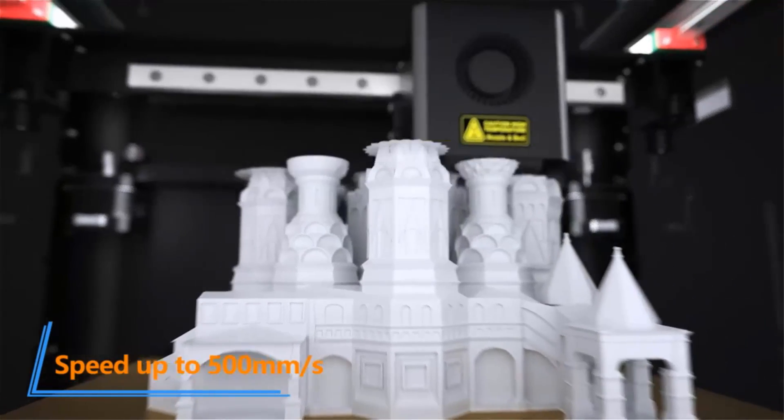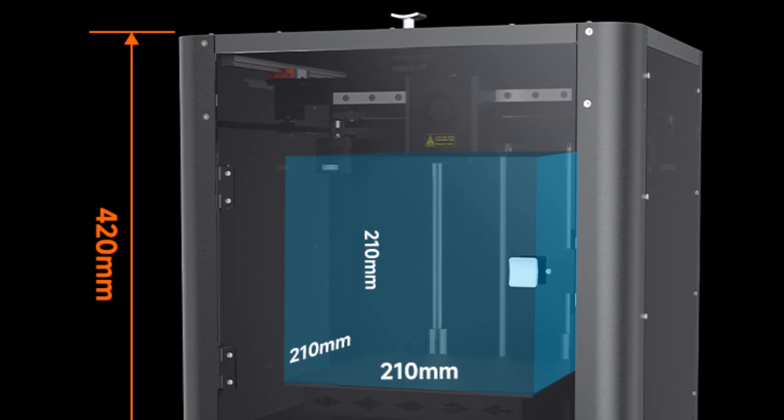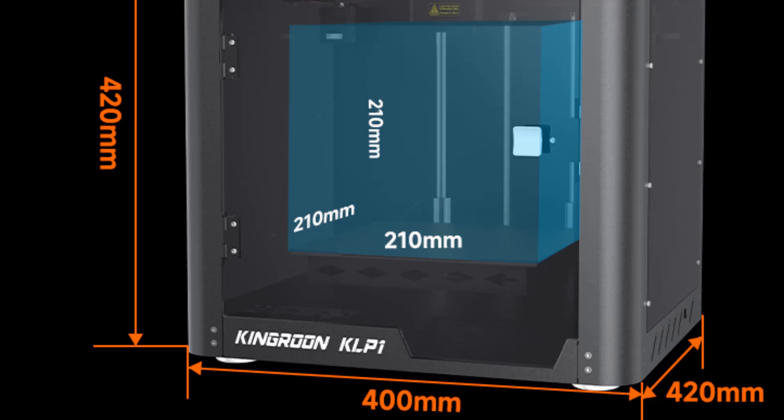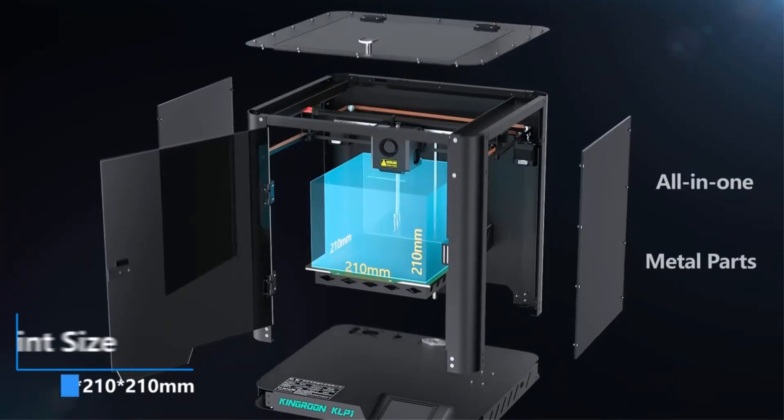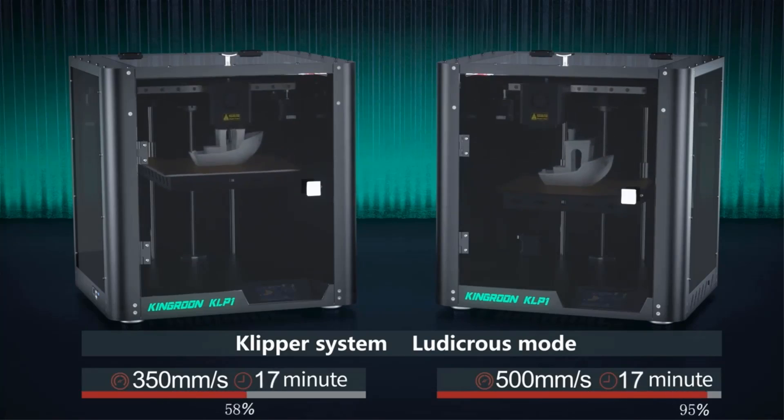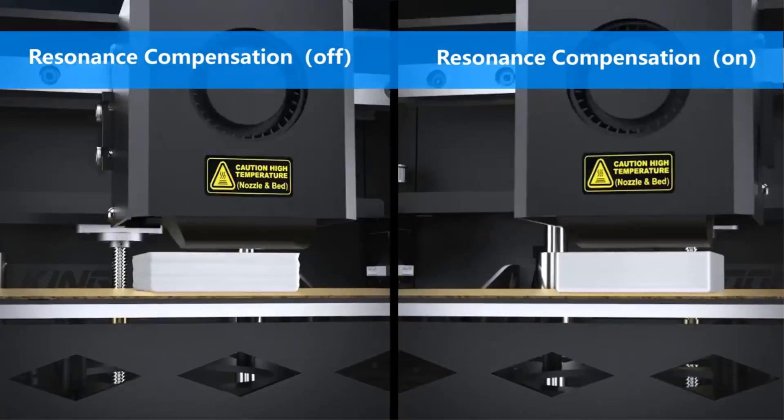Featuring an all-metal hotend with a ceramic heating core, the KLP-1 enables a wider range of material options, including conventional materials like PLA, ABS, PETG, TPU, and wood, but also high temperature materials like nylon and carbon fiber.